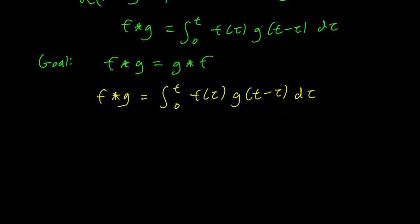And the key step here is to make a change of variable. So let's change the variable. Let's call sigma equals t minus tau.